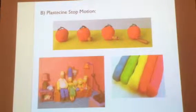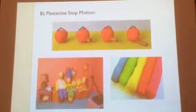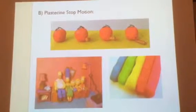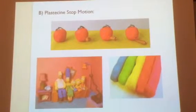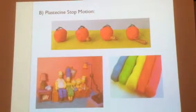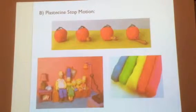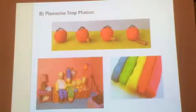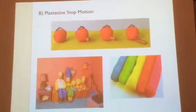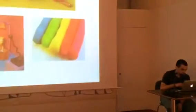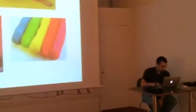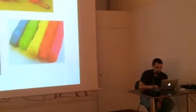Category B: plasticine stop motion. In this variation of stop motion, the movements are recreated by making the characters and scenery out of plasticine.